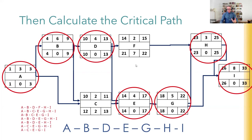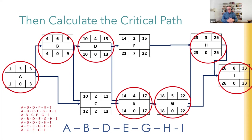That is the critical path - any activity on it has zero slack or float, meaning if any one of them slips, the end duration increases. I do want to stress: you'll never need to do this manually; the software does it all for you. But knowing how it works helps you use the software competently. Now that you've got your project schedule, you've identified your critical path, you know your project duration - but be warned.